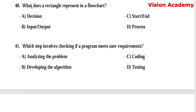Question number 40: What does a rectangle represent in a flowchart? Option A, decision. Option B, input/output. Option C, start/end. Option D, process. Here, option D, process, is the right answer.